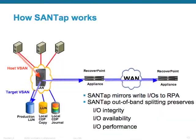Cisco SanTap offers several advantages. Unlike data path appliances, SanTap out-of-band fabric splitting provides a reliable copy of the write IOs to the appliance, preserving IO integrity and availability. Meaning errors on the appliance or on the path to the appliance don't affect the host IOs, and without impacting application performance. Cisco SanTap enables a scalable replication solution for mission-critical applications running on heterogeneous storage.